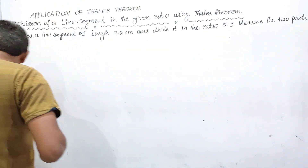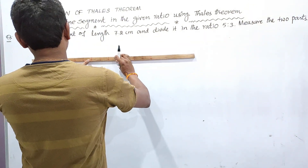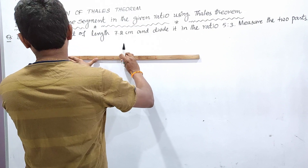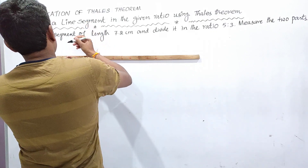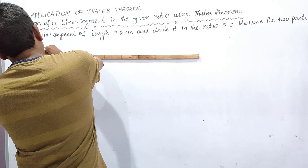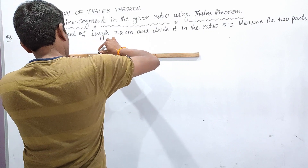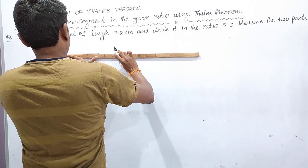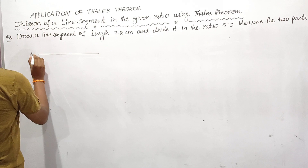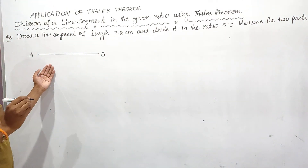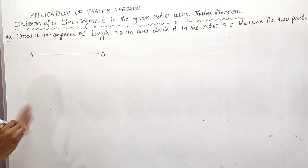First I am drawing a line segment of length 7.2 centimeters. This is the line segment — let it be A and B. So the length of this line segment is 7.2 centimeters. I have drawn a line segment of length 7.2 centimeters.